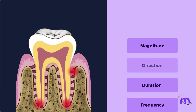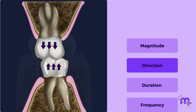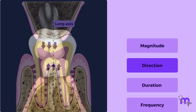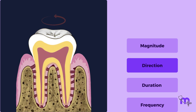The next factor is direction. A change in the direction of forces affects the periodontium. The periodontium can better tolerate forces that fall along the long axis of the tooth. But if the forces fall in a rotational or horizontal direction, they cause a change in the direction of stresses and strains within the periodontium. They are more injurious in nature.